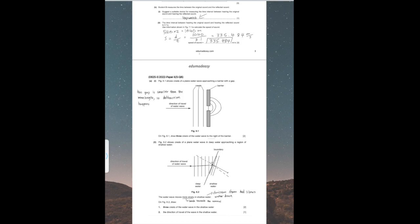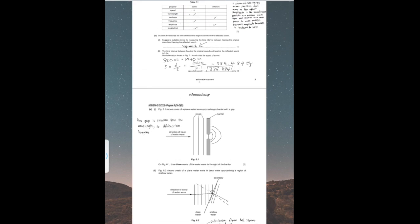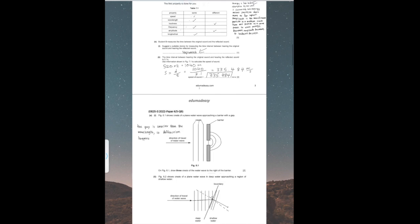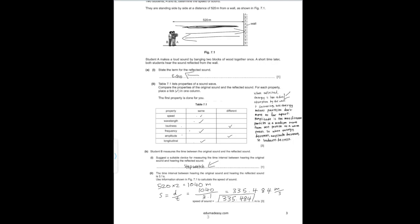Part II states: the time interval between hearing the original sound and hearing the reflected sound is 3.1 seconds. Use information shown in Figure 7.1 to calculate the speed of sound. We know the distance the sound is traveling is 520 meters, and it's going there and back, so that's 520 × 2 = 1,040 meters. Speed equals distance over time, the time is 3.1 seconds, so that's 1,040 ÷ 3.1, which gives you approximately 335 m/s.